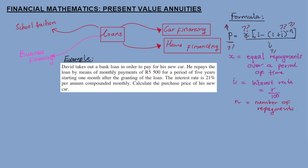Since this is just an introduction to present value annuity, here is a simple example. David takes out a bank loan in order to pay for his new car. He repays the loan by means of monthly payments of five thousand five hundred rand for a period of five years, starting one month after the granting of the loan. The interest rate is 21% per annum compounded monthly.